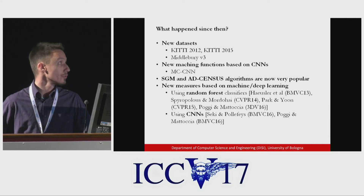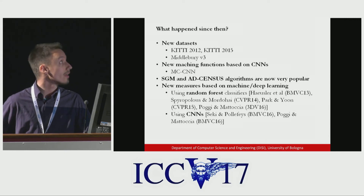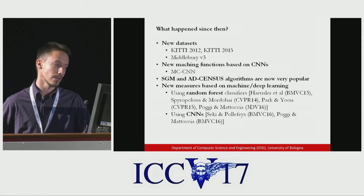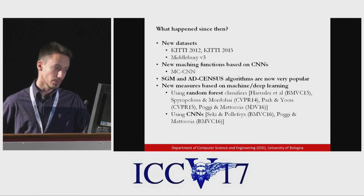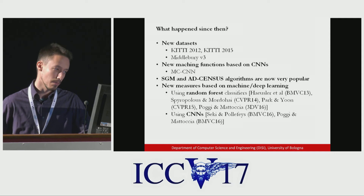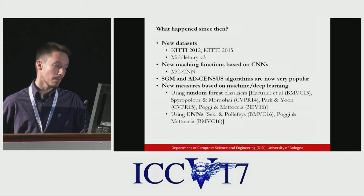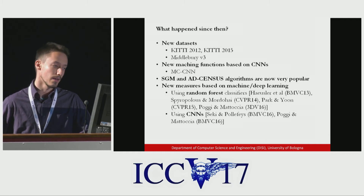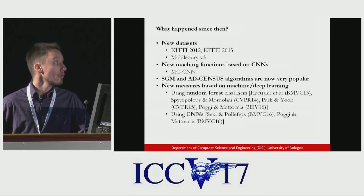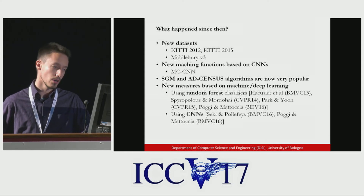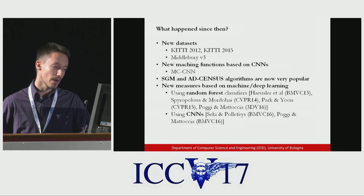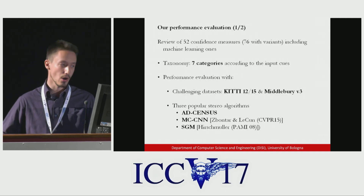But computer vision moves fast, and since 2012 we have had many more datasets — in particular the challenging KITTI datasets and the Middlebury V3 dataset. We also have new matching cost functions based on deep learning, in particular MC-CNN, made popular by Zbontar and LeCun. Semi-global matching and AD census have also become very popular, deployed on almost all real-time stereo pipelines. More importantly, we also have new confidence measures based on machine learning and deep learning, most of them using random forest classifiers or CNNs to classify pixels according to their reliability into confident or unconfident pixels.